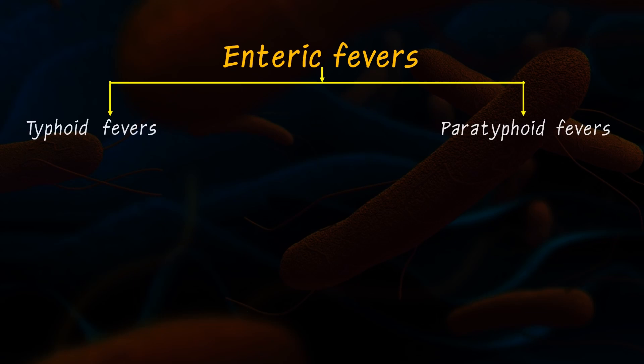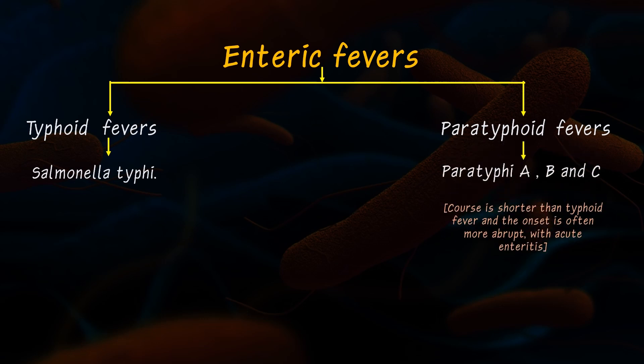Talking about the causative organisms, typhoid is caused by a gram-negative bacillus called Salmonella typhi, and paratyphoid is caused by serotypes paratyphi A, B, and C.